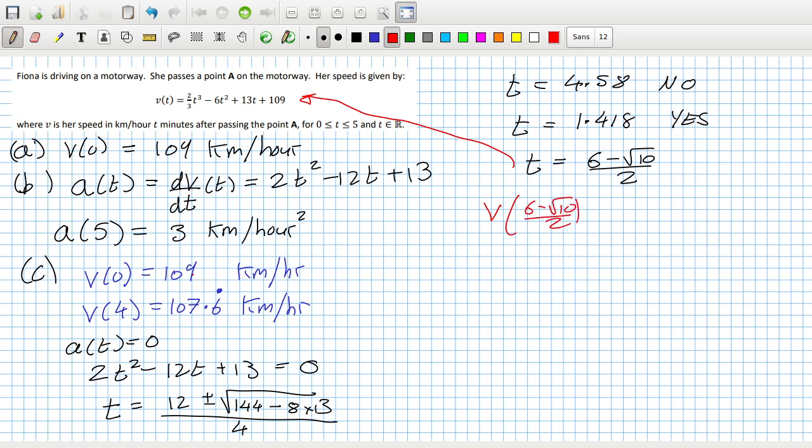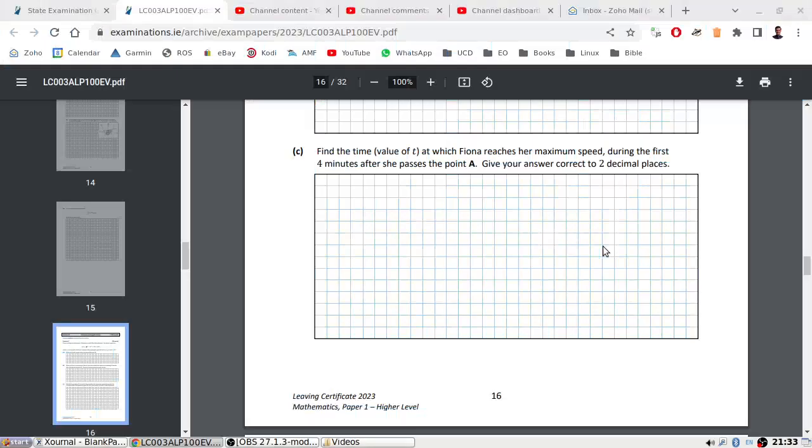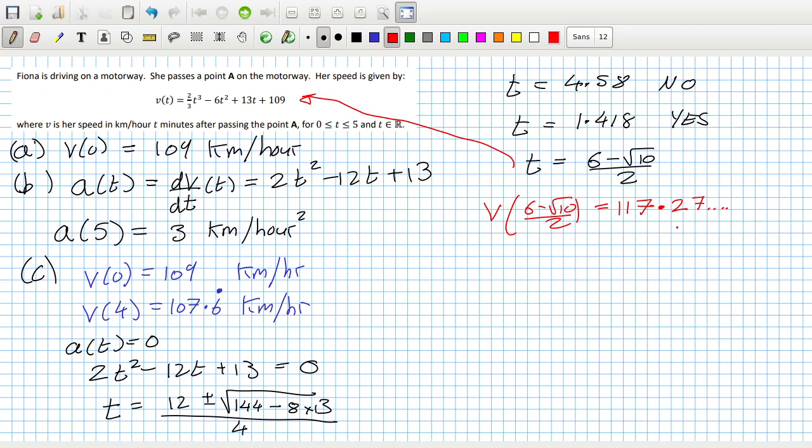And if it is bigger than either of these, we'll go with that answer. Otherwise, we'll go with one of these two at the boundary. 2/3 times that cubed minus 6 times that squared plus 13 times that plus 109. That is 117.27, et cetera. Two decimal places. Kilometers per hour.